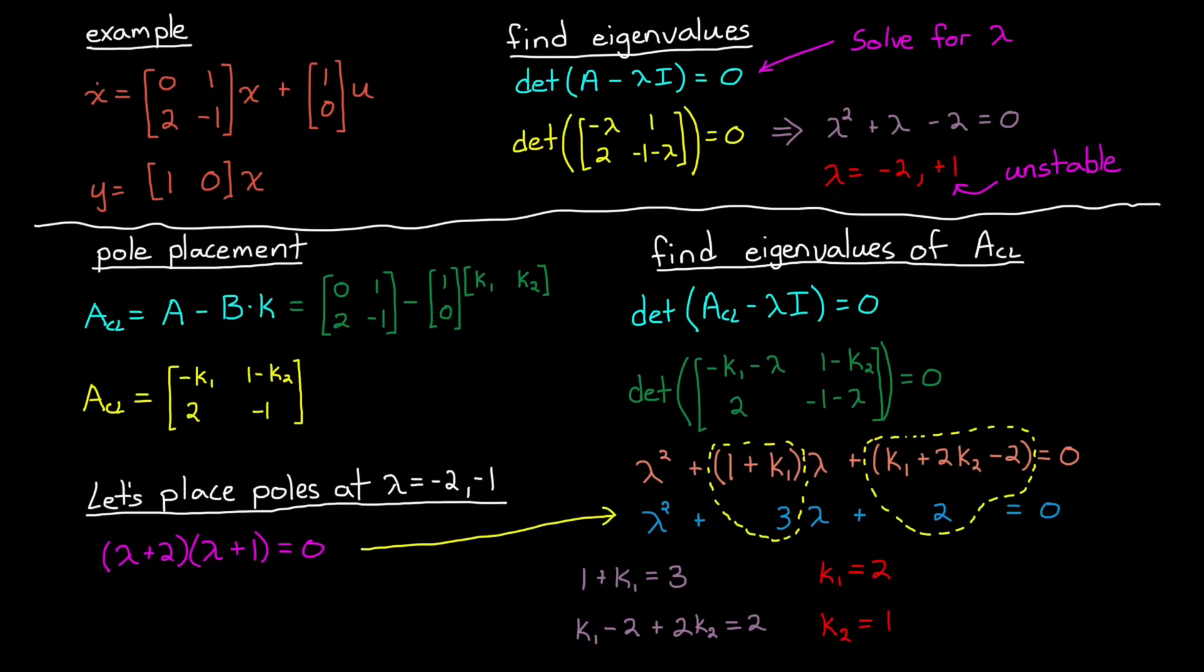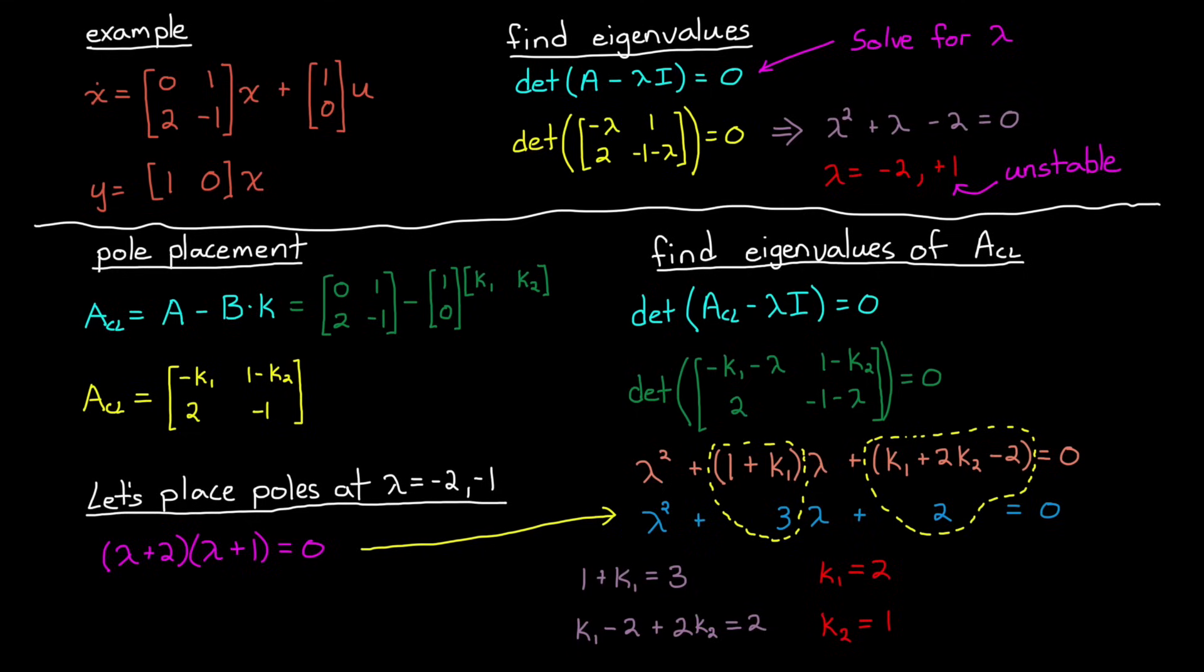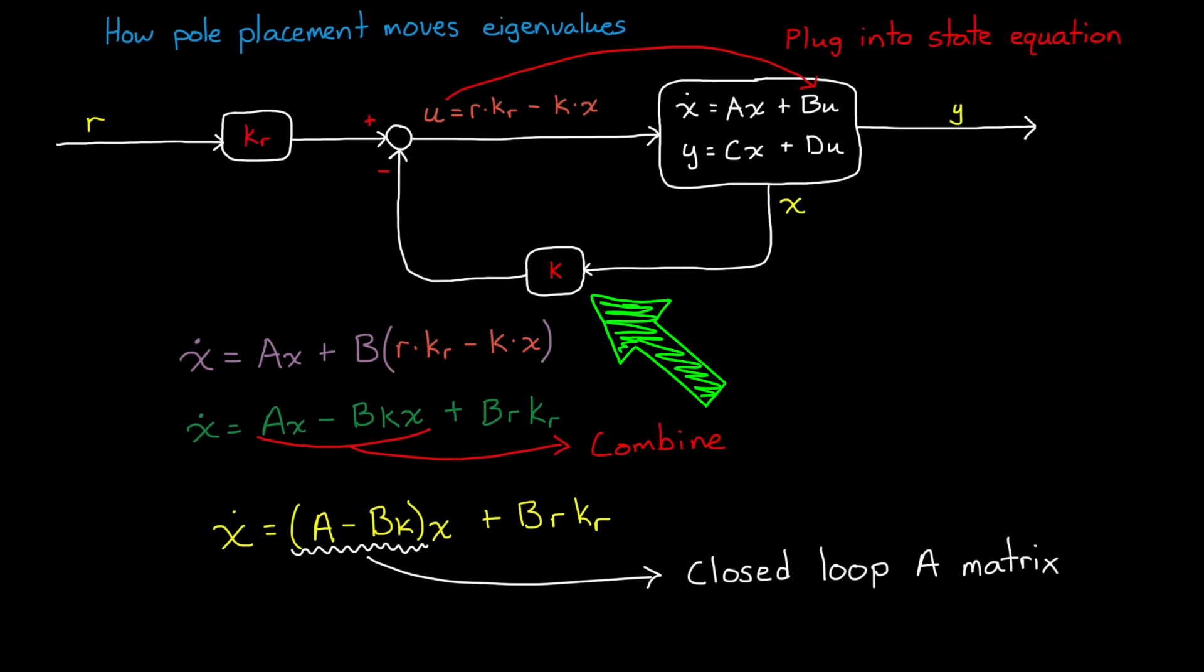And that's it. If we place these two gains in the state feedback path of this system, it will be stabilized with eigenvalues at minus 1 and minus 2.